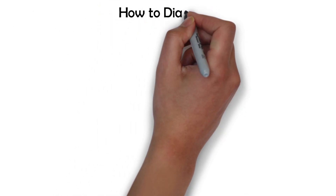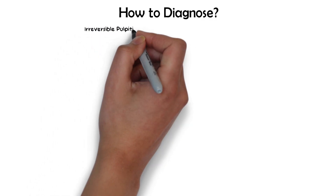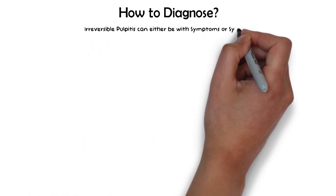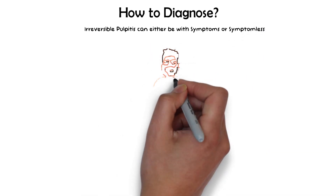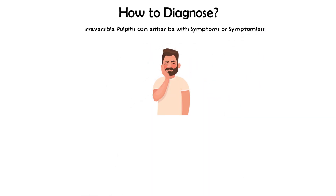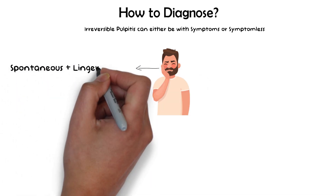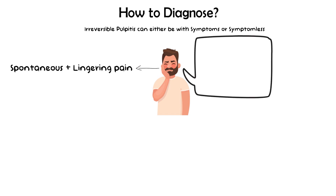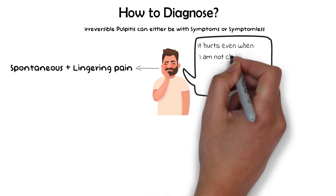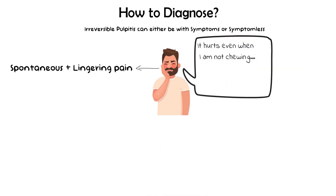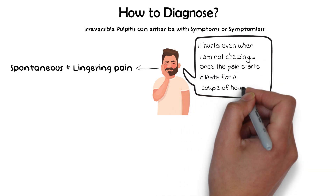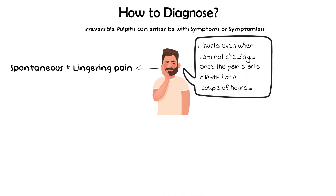Now, how to diagnose irreversible pulpitis? Irreversible pulpitis can either be symptomless or it can have clinical signs and symptoms. When symptomatic, the patient usually presents with spontaneous lingering pain — meaning the pain will elicit without any external stimuli; it will essentially start on its own. A patient will complain of spontaneous pain that lasts a couple of minutes or even a few hours before dying off.